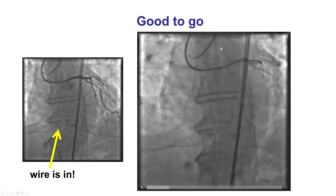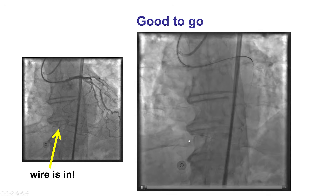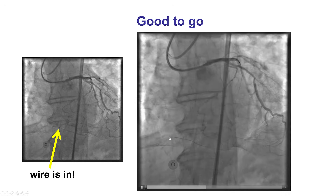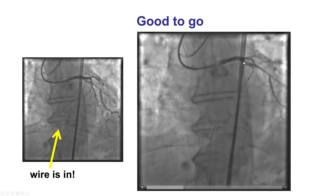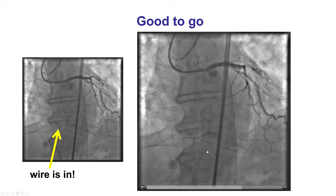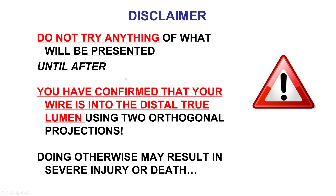Instead, what was done in this case is the wire was pulled back and repositioned, and now we see that the guide wire is indeed into the distal true lumen. Now is the time to advance the microcatheter over the retrograde guide wire. Nothing should be done before confirming that the guide wire is into the distal true lumen — that is true for wire-crossing collaterals, but it's also true for wire-crossing balloon and crossover lesions.